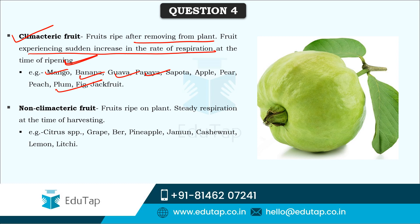Non-climacteric fruits ripen only while present on the plant, with steady respiration at the time of harvesting. Examples include citrus species, grape, ber, pineapple, jamun, cashew nut, lemon, and lychee.